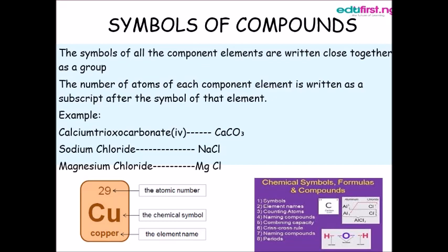Other examples include calcium trioxocarbonate which is written as CaCO3 - that is calcium, carbon, and oxygen with three atoms of oxygen. We also have sodium chloride NaCl and magnesium chloride MgCl2.